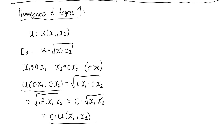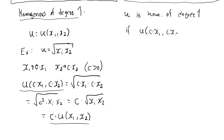If that is the case for all c greater than zero, then we say that the function is homogeneous of degree one. Here is the formal definition: u is homogeneous of degree one if the utility function evaluated at cx1 and cx2 is precisely equal to c times u(x1, x2) for all c greater than zero.